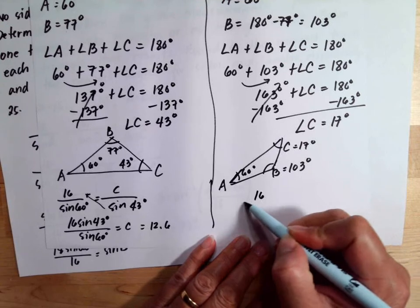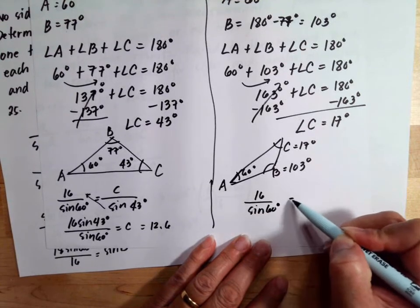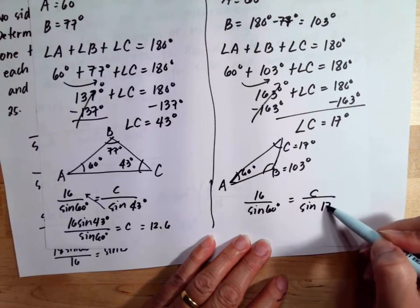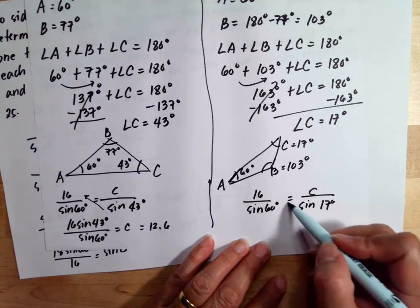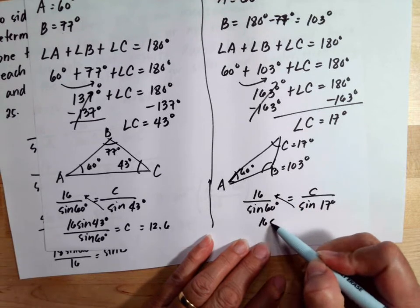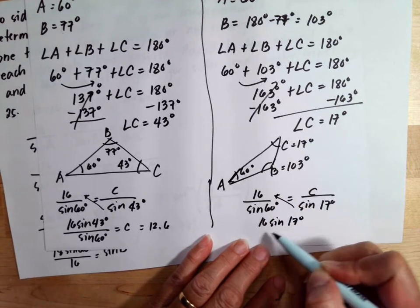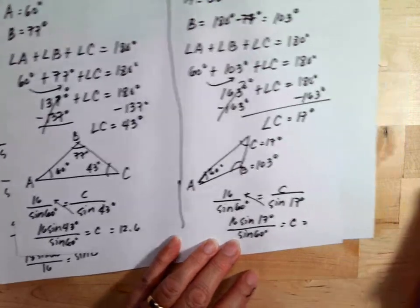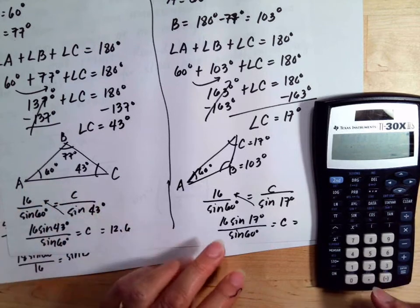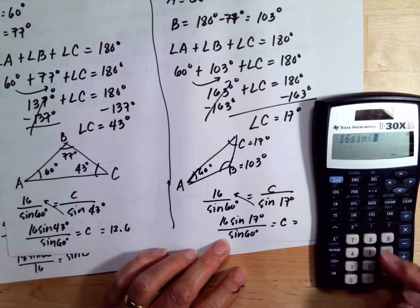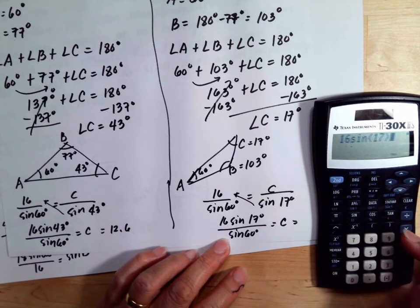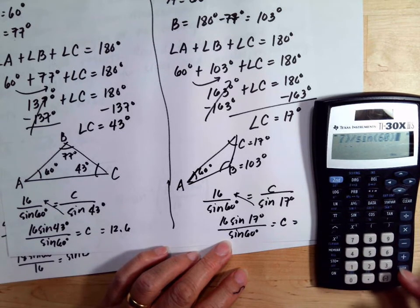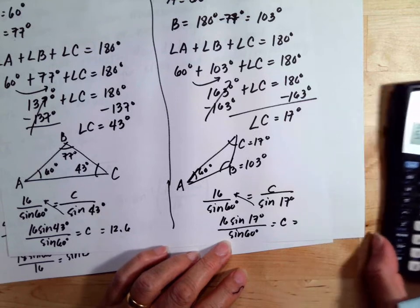For the second triangle, we use 16 over sine 60 degrees equals c over sine 17 degrees. Cross multiplying gives c equals 16 sine 17 degrees over sine 60 degrees. Entering 16 sine 17 divided by sine 60 into the calculator gives side c equal to 5.4.